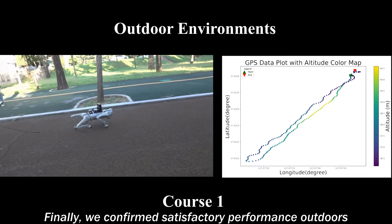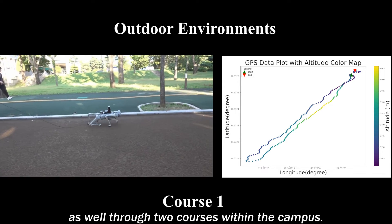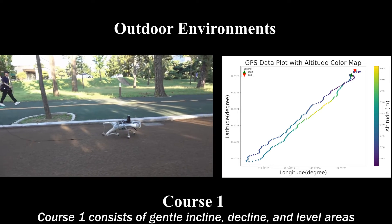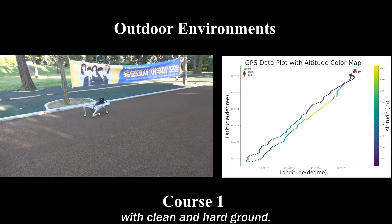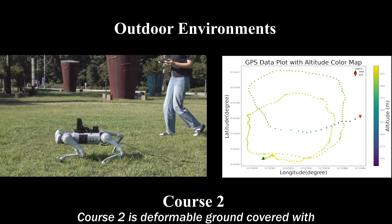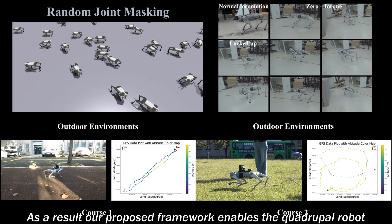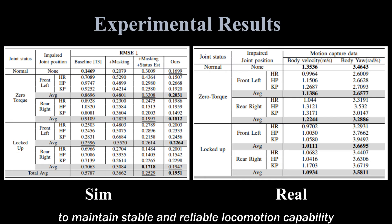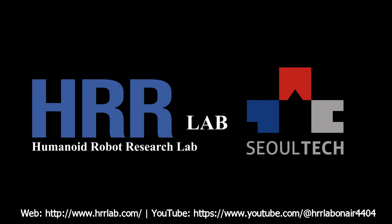Finally, we confirmed satisfactory performance outdoors as well through two courses within the campus. Course 1 consists of gentle incline, decline, and level areas with clean and hard ground. Course 2 is deformable ground covered with soft grass and small pebbles. As a result, our proposed framework enables the quadrupedal robot to maintain stable and reliable locomotion capability, even under various impaired joint conditions. Thanks for watching.